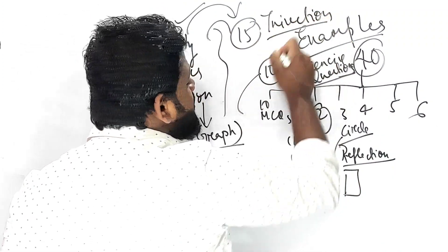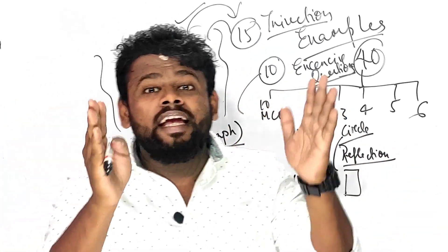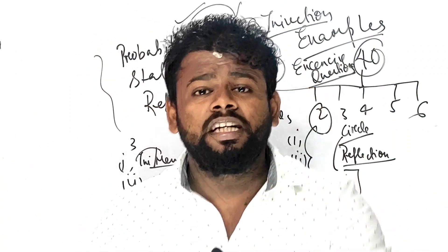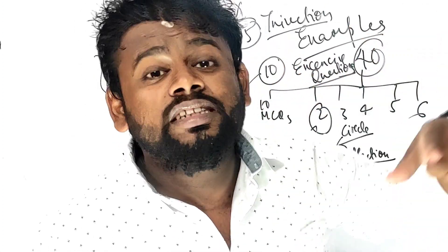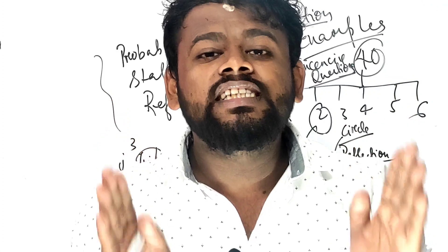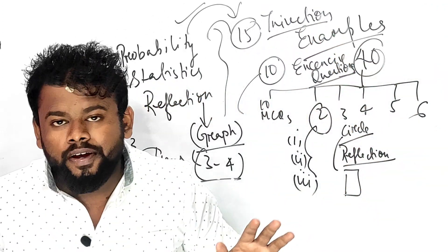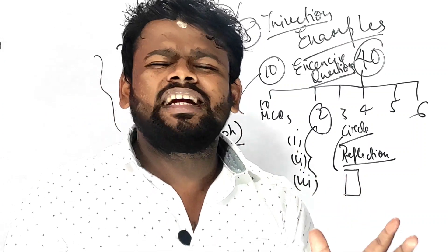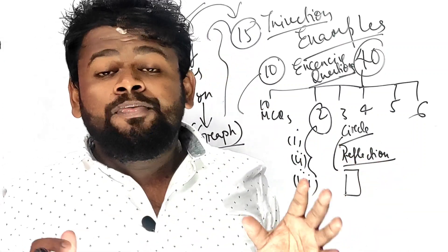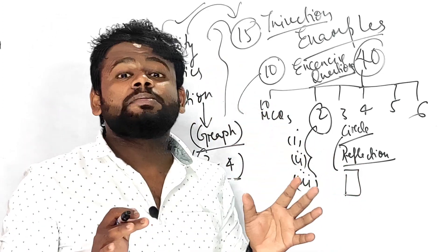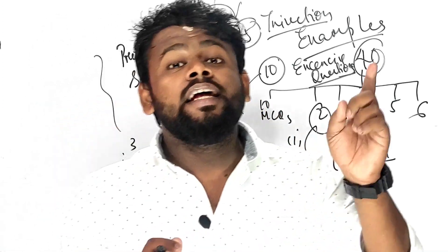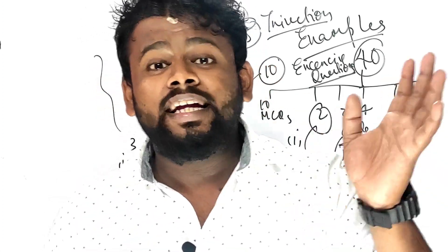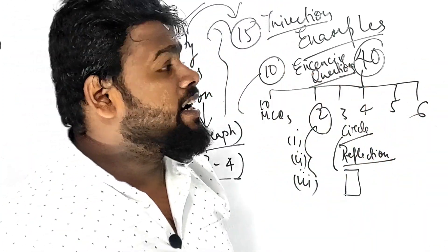Trisection means ratios like 2:1, 1:2, k:2, and 2:k — these are the types of questions that will be coming in the examination. These are favourite questions of the ICSE Class 10 examination, as they generally appear in previous year questions (PYQs). Please do not take it lightly — start reading right now. For the Midpoint and Section Formula, maximum questions come from the trisection part using ratios like k:2 and 2:k.